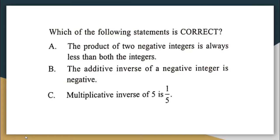The first statement says the product of two negative numbers is always less than both the integers. Let us take two numbers: minus 3 and minus 2. The product is minus 3 multiplied by minus 2, which equals 6. The product is actually greater than both negative numbers — 6 is greater than minus 3 and minus 2. So the first statement is wrong. The product of two negative numbers will always be a positive number, so it has to be greater than the given negative integers.